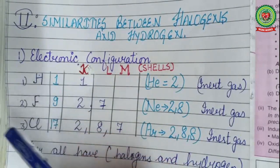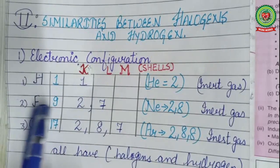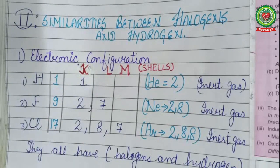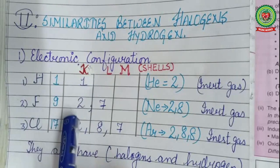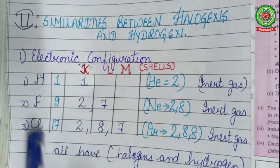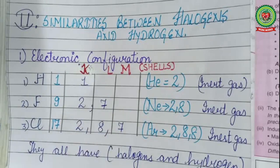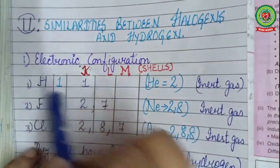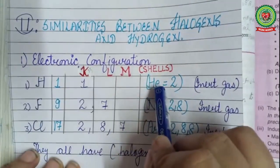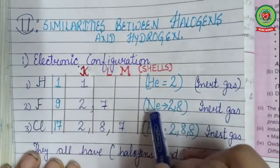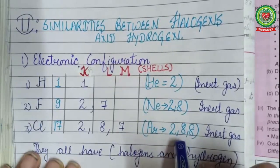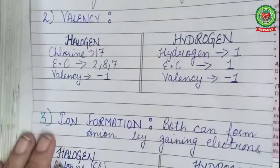The first similarity is electronic configuration. Taking hydrogen (H), fluorine (F), and chlorine (Cl) with atomic numbers 1, 9, and 17 respectively: hydrogen's configuration is 1; fluorine's is 2,7; chlorine's is 2,8,7. The key similarity is that all three are one electron short of their nearest inert gas — hydrogen is one electron short of helium (atomic number 2), fluorine is one electron short of neon (atomic number 10), and chlorine is one electron short of argon (atomic number 18, configuration 2,8,8).